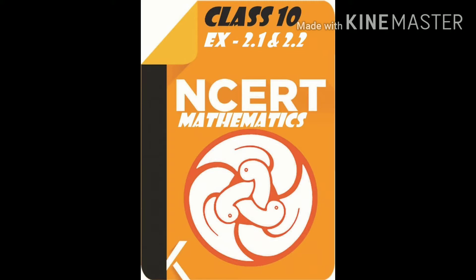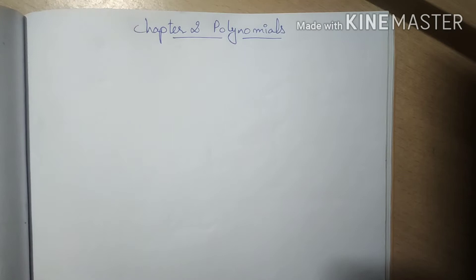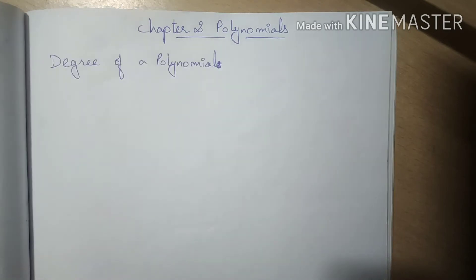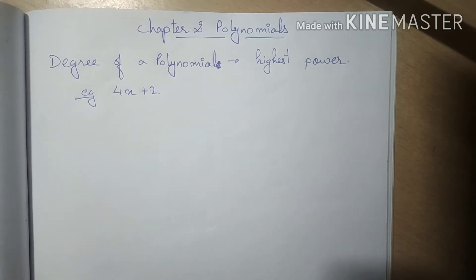Let's start the next chapter: polynomials. As we studied in class 9th, a polynomial is an expression consisting of variables and coefficients, where variables are the indeterminate terms. We also studied the degree of a polynomial, which is the highest power of the variable. A polynomial with degree 1 is known as a linear polynomial.